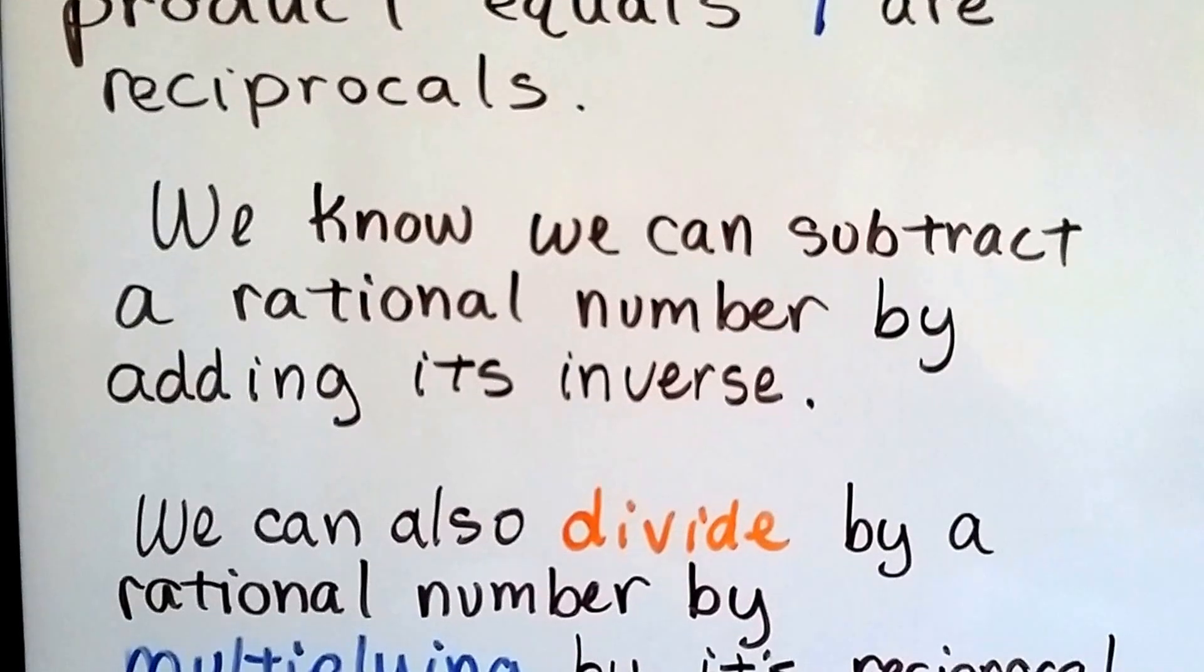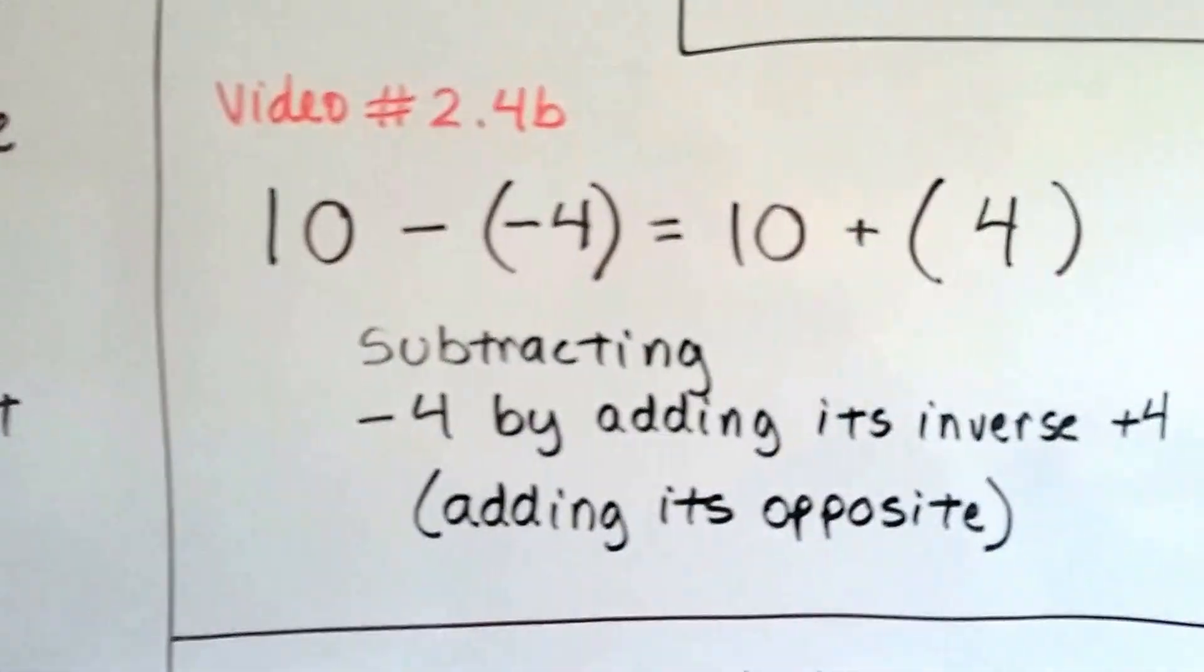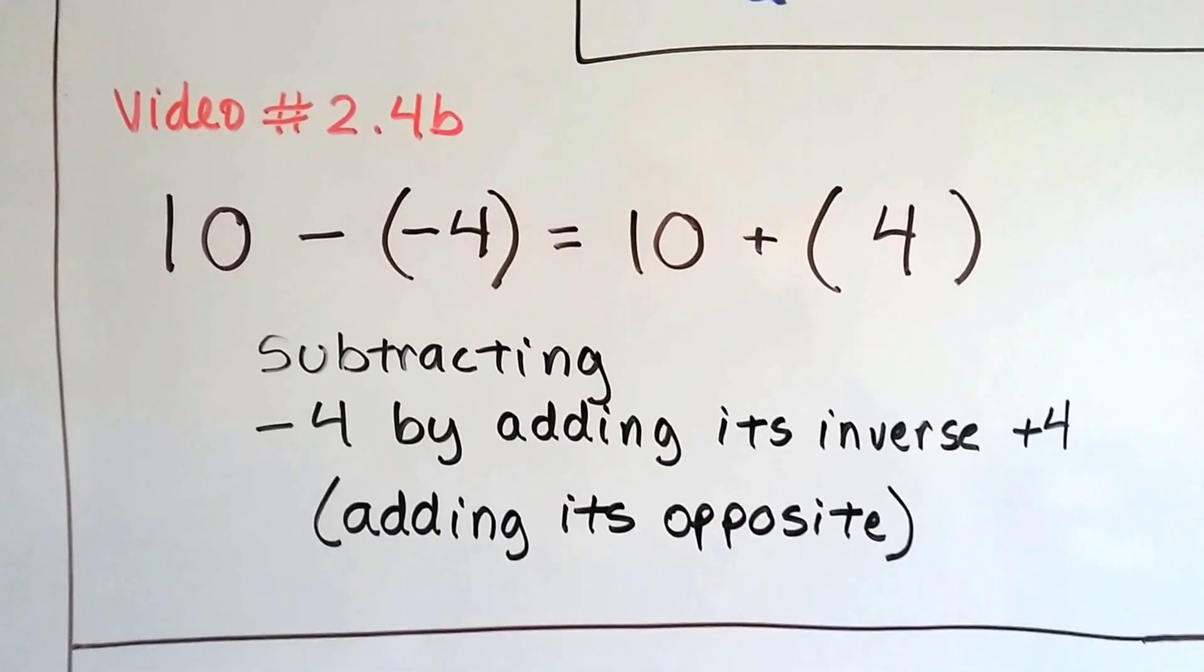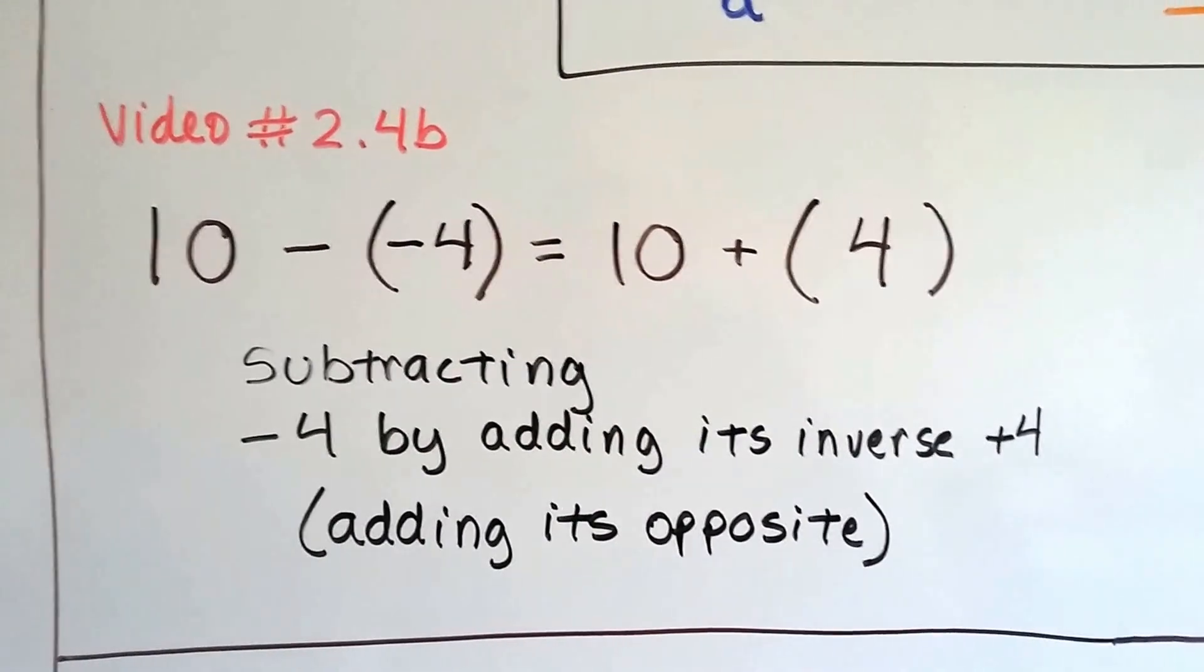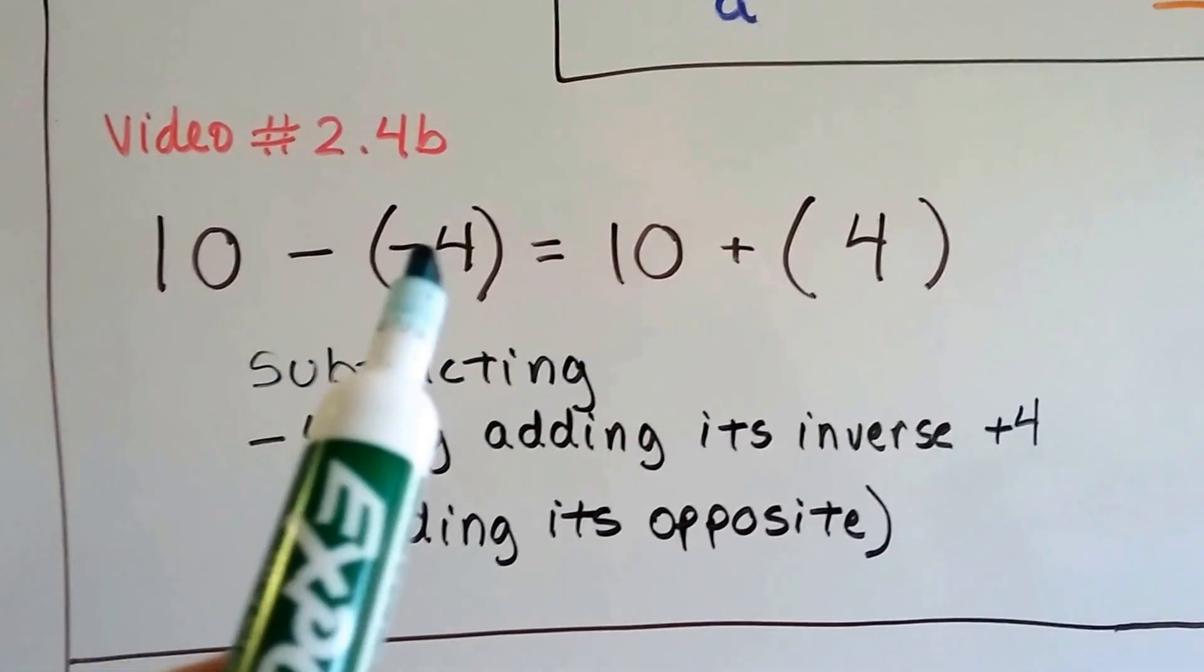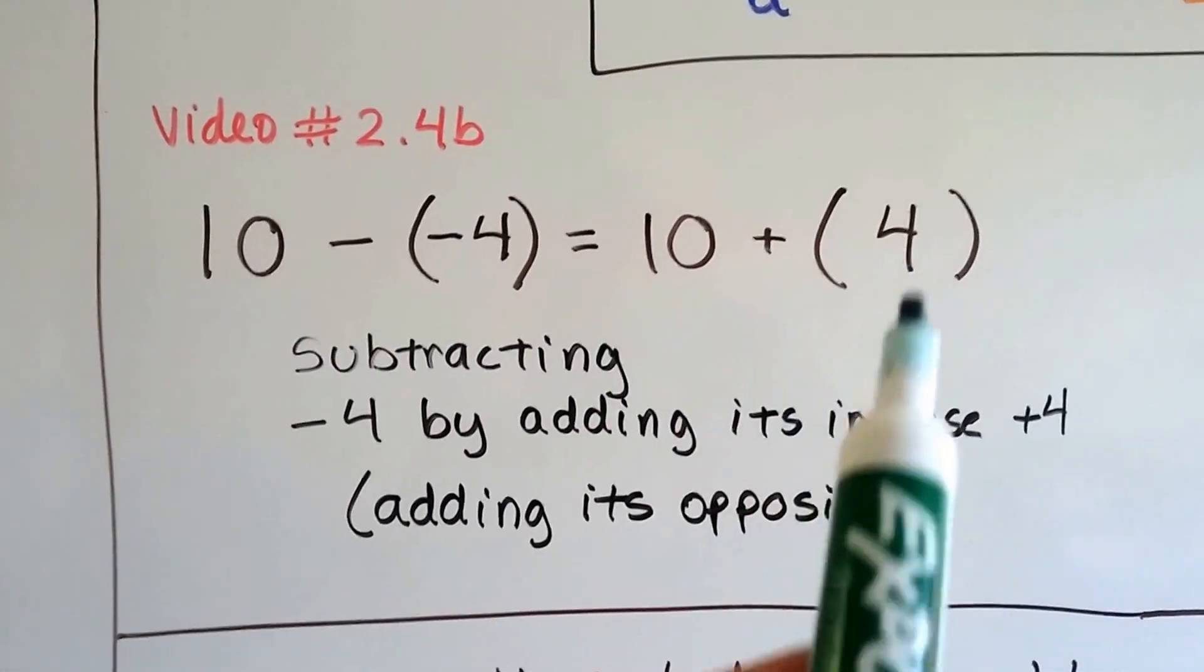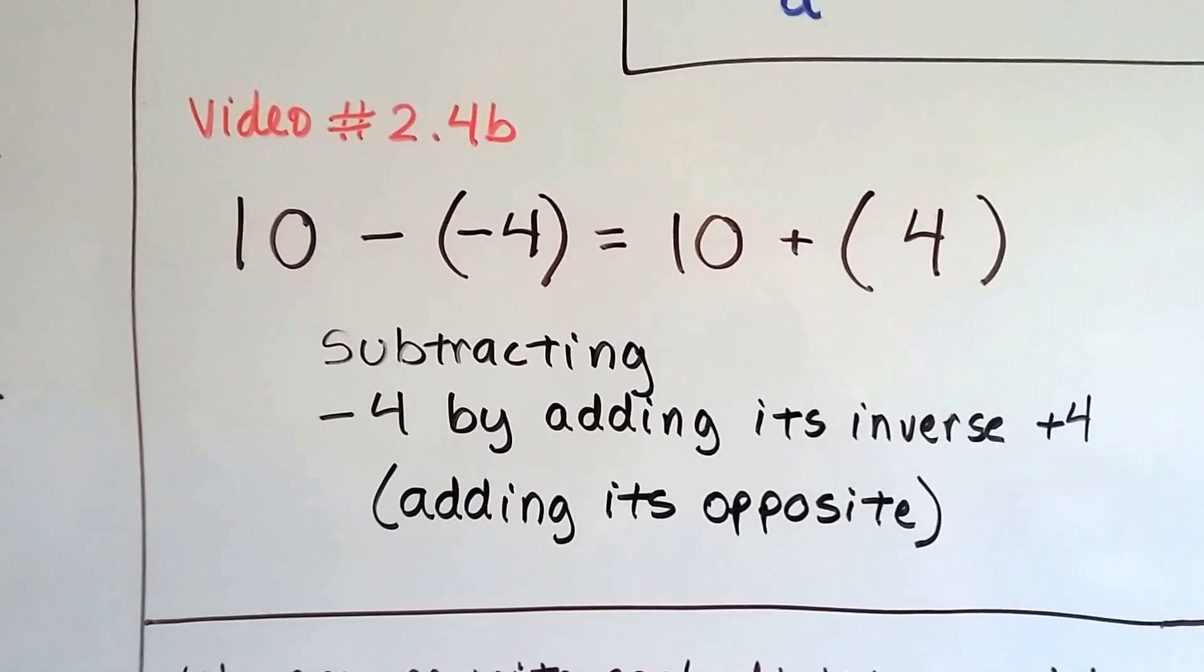We know we can subtract a rational number by adding its inverse. So if you remember from video 2.4b, if we have 10 minus a negative 4, we can subtract a negative 4 by adding its inverse, adding its opposite. So instead of 10 minus a negative 4, we do 10 plus 4. We add its opposite. And the opposite of negative 4 is positive 4.